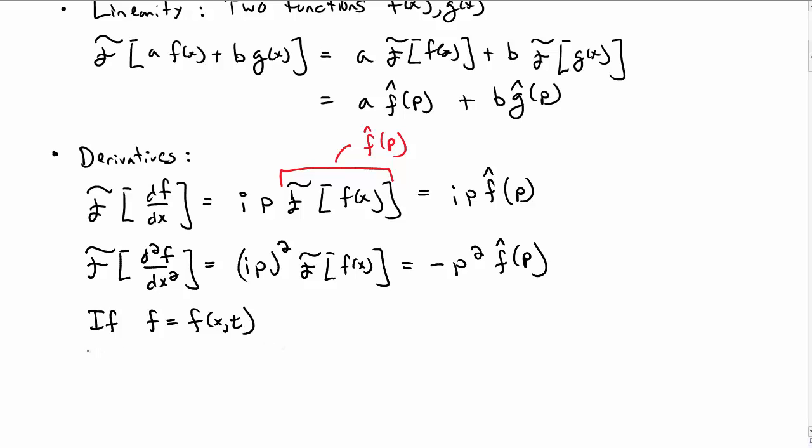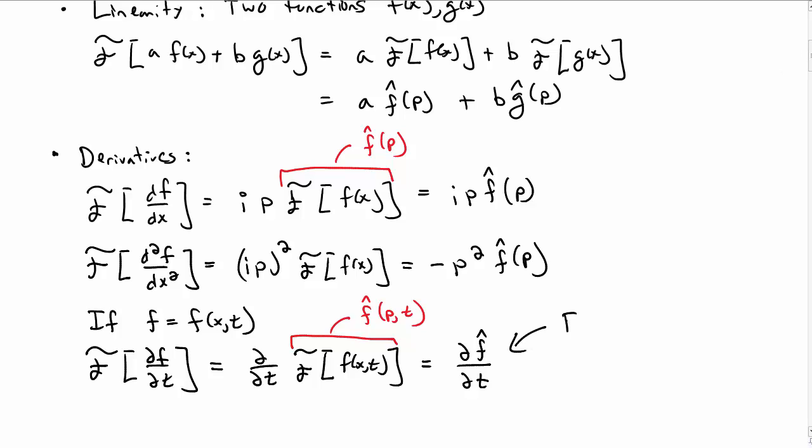What if f is a function of x and t? Well, you can take the Fourier transform of the partial derivative of f with respect to t, and it turns out that the partial derivative just comes right out of the Fourier transform. So it's the partial derivative with respect to t of the Fourier transform. Let's call that Fourier transform f hat of p comma t. Note that I've just exchanged x for p, but there's still t dependence, so there's still a time derivative, so we can take df hat dt.